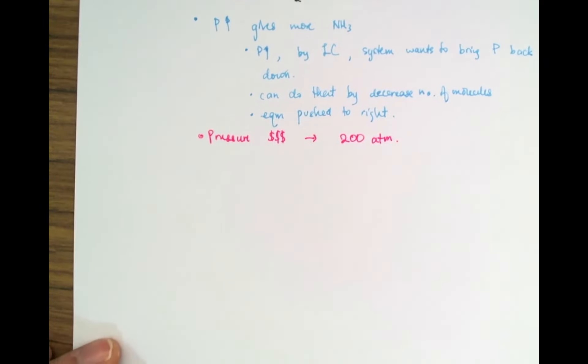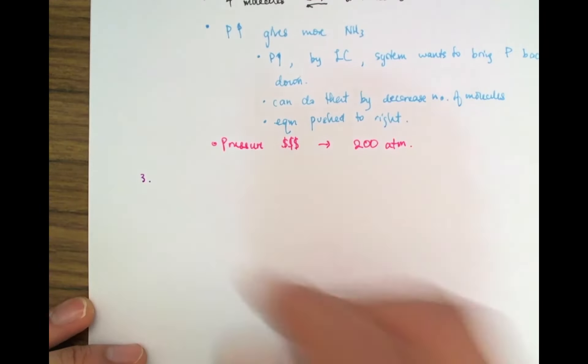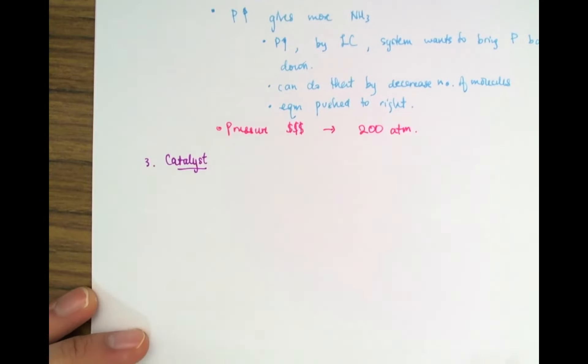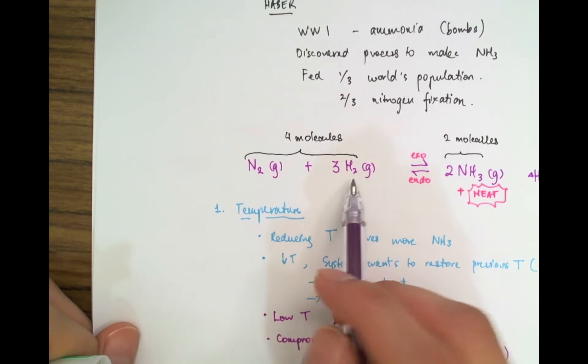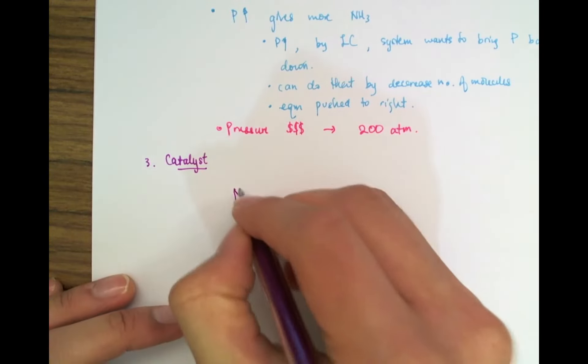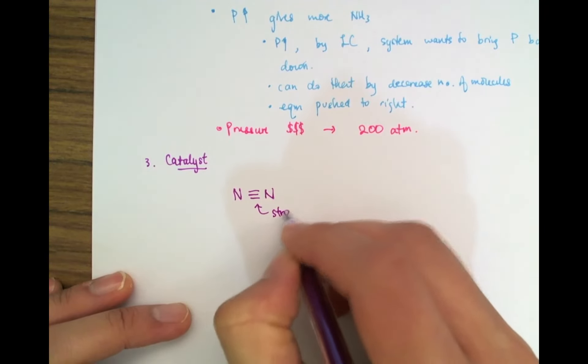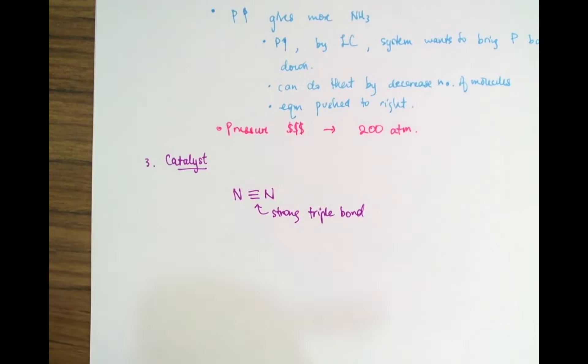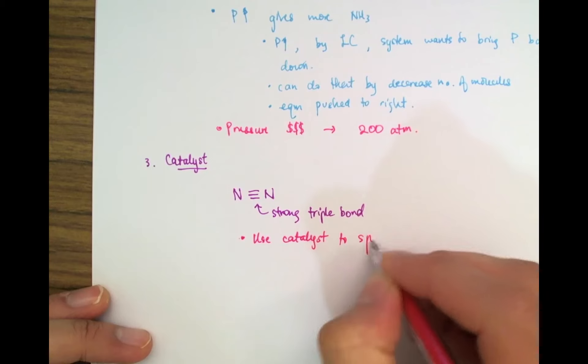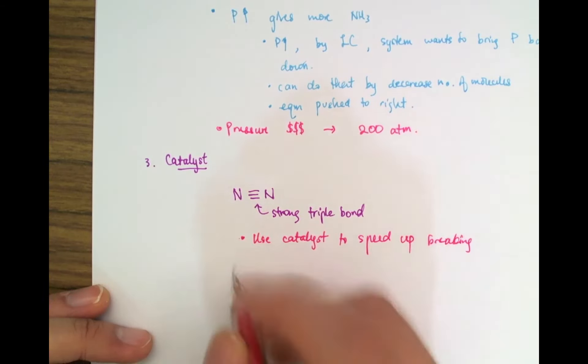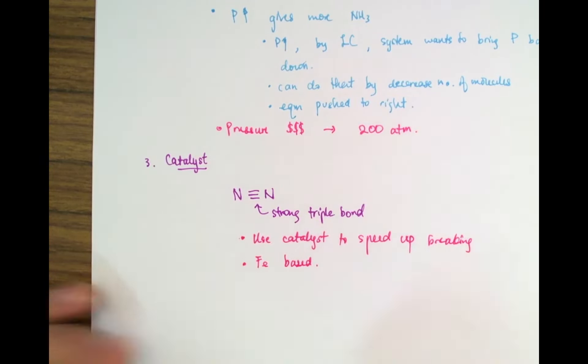The third thing that can help in the more efficient production of ammonia is the presence of a catalyst. Now, the reaction here involves breaking of bonds in the nitrogen and in the hydrogen before it can form bonds in ammonia. However, nitrogen has a very strong triple bond in it. So it's really hard to break. So what we do is we use a catalyst to help speed up this breaking of the triple bond. And it turns out that the most suitable catalyst is iron-based.